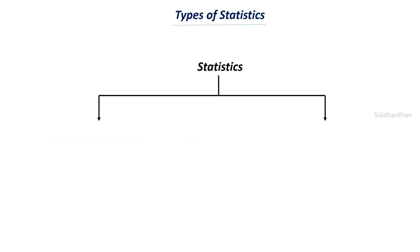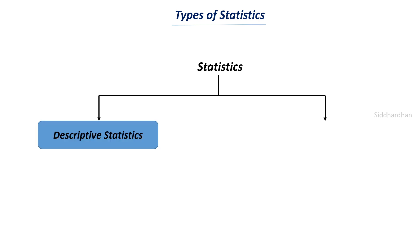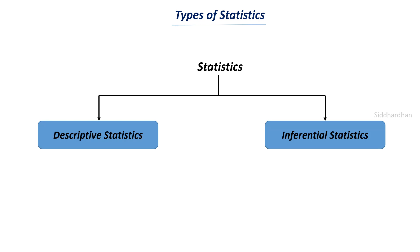The two main important types of statistics are descriptive statistics and inferential statistics. These names are self-explanatory. Descriptive means giving some description or summarization to the data. Inferential statistics means finding some inferences and insights from the data. In descriptive statistics we just try to describe the data better, whereas in inferential statistics we try to get inferences about the data and also try to predict future cases.